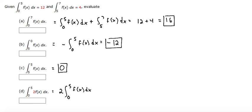0 to 5 is equal to 12, so this would be 2 times 12, which is equal to 24. And that would be our final answer. Thank you very much.